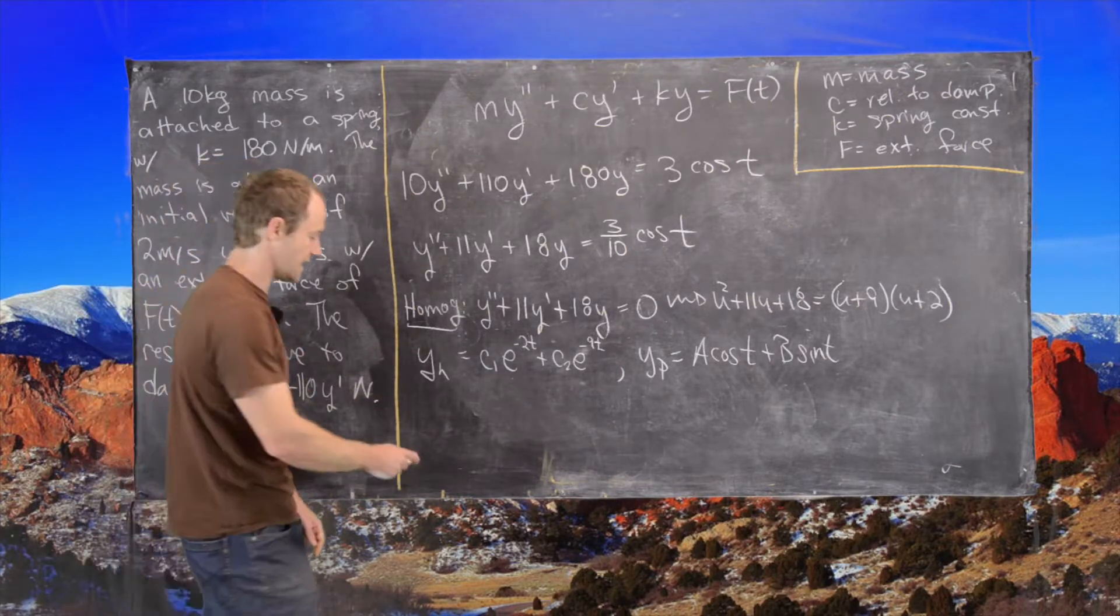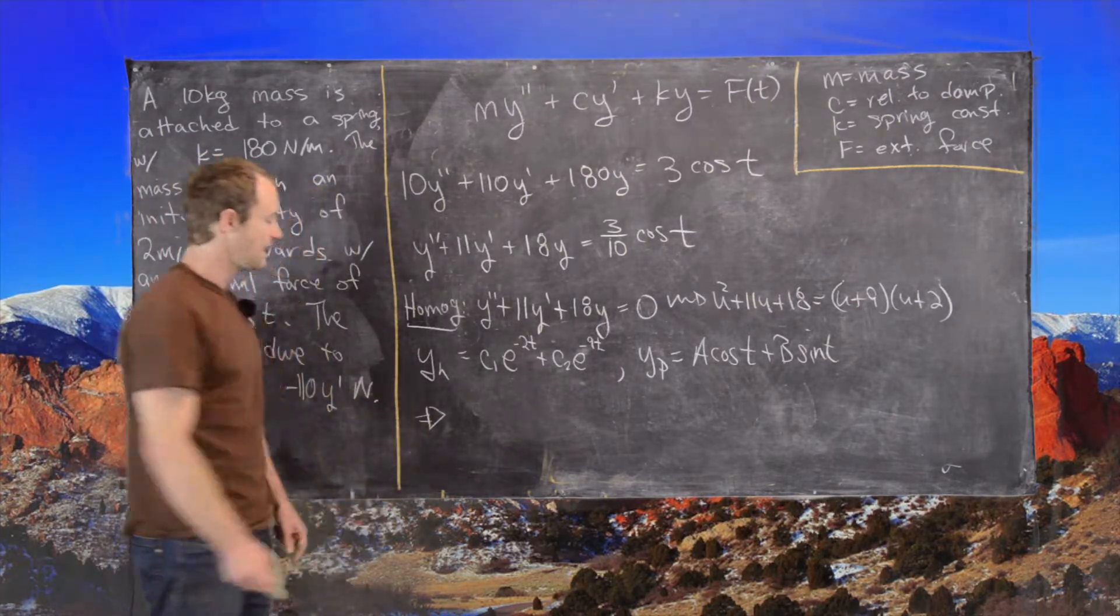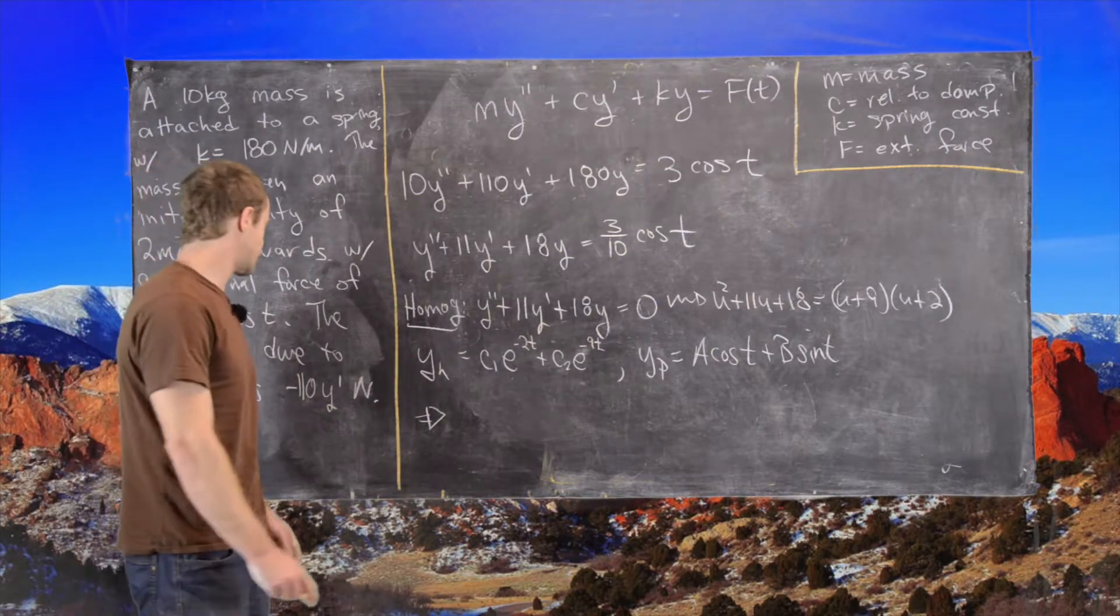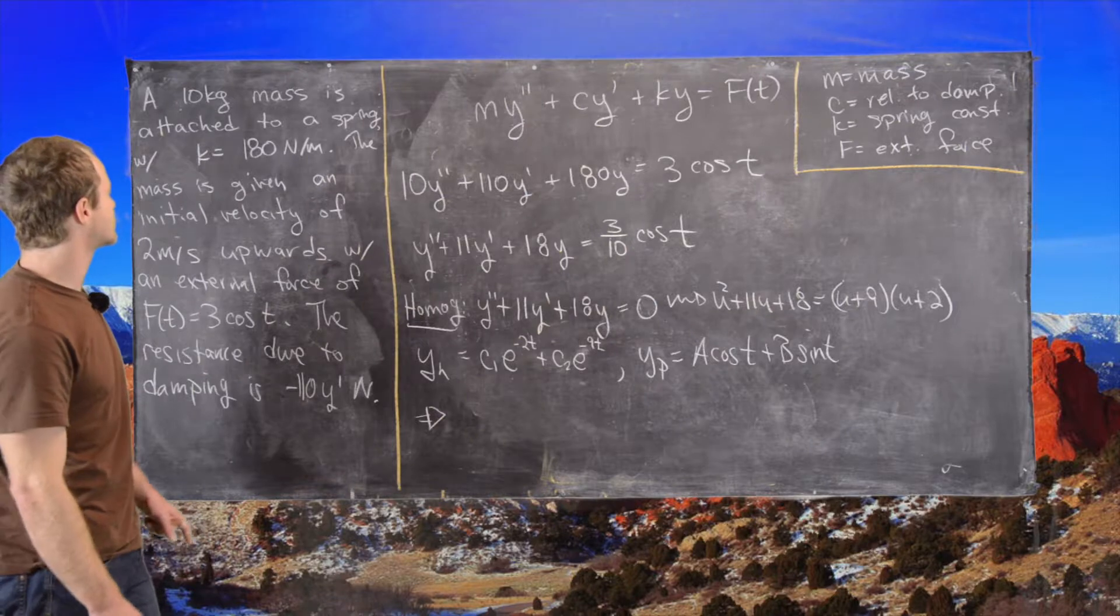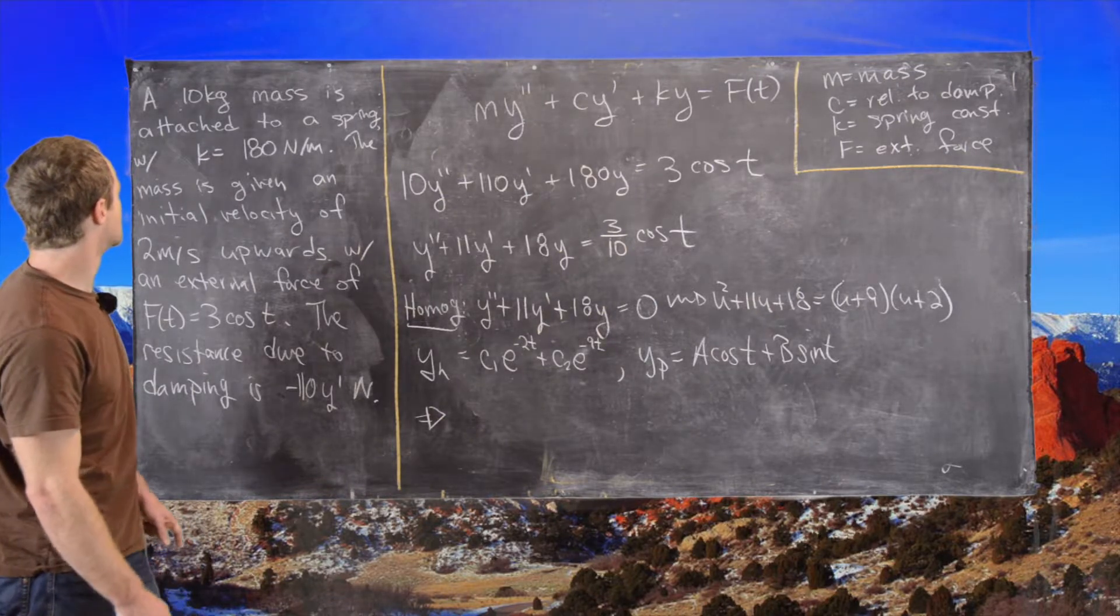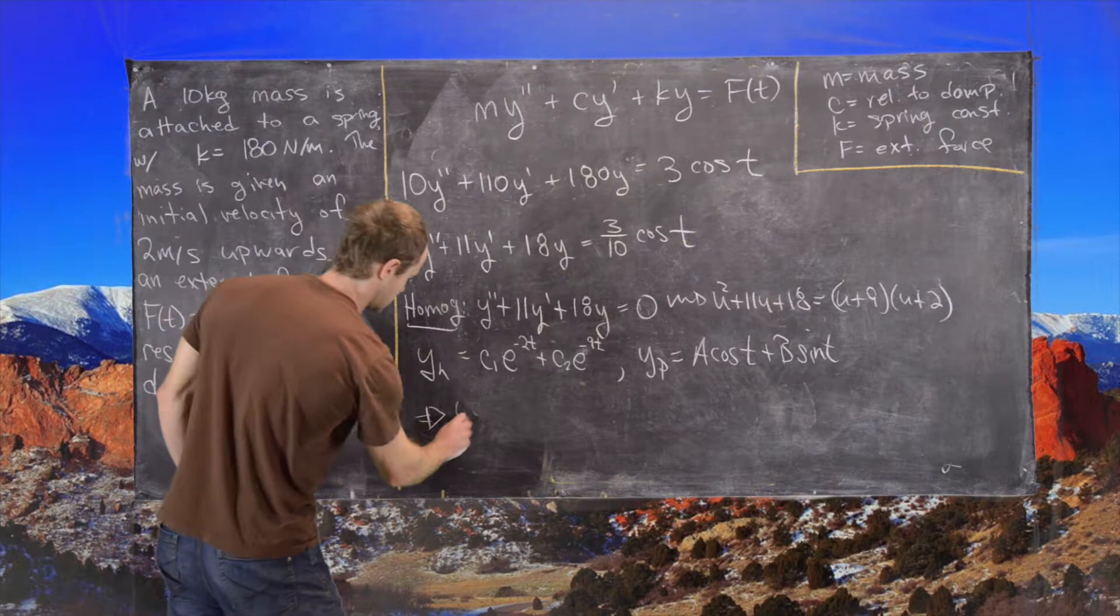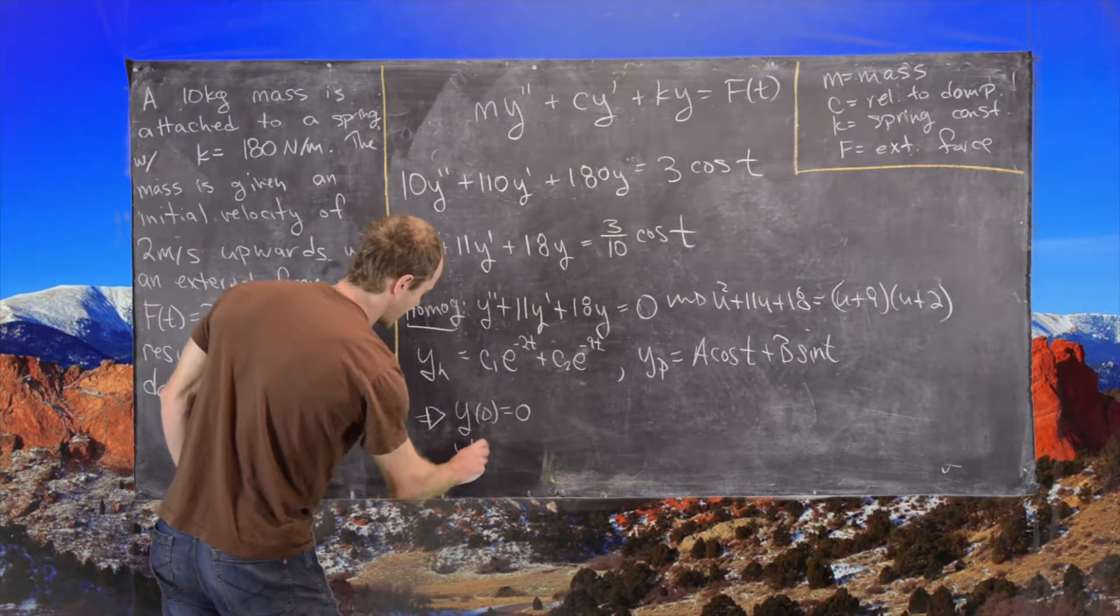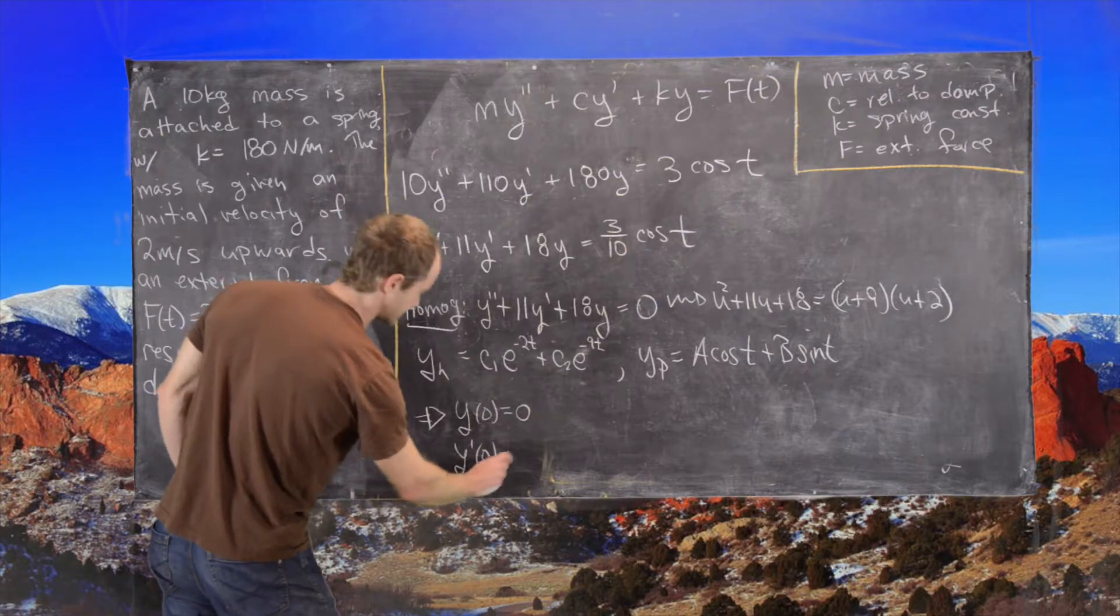And I'll just jump towards the end. In the end, after applying the initial condition, which I should say what that is. So our initial condition is y of 0 is equal to 0 and y prime of 0 is equal to 2.